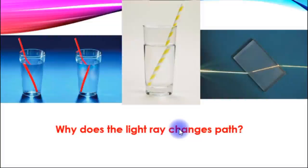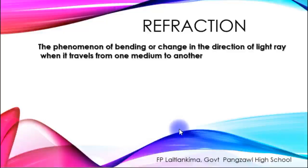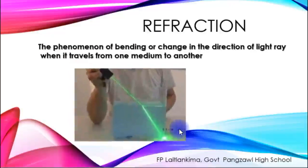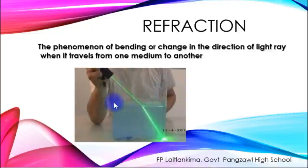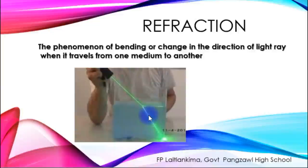Why does the light ray change its path? The definition is the phenomenon of bending or change in the direction of light when it travels from one medium to another. This phenomenon is called refraction.